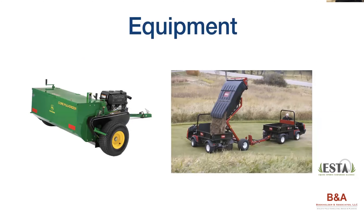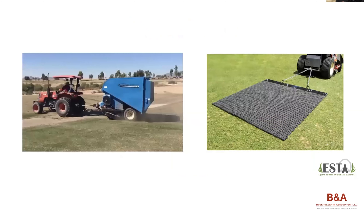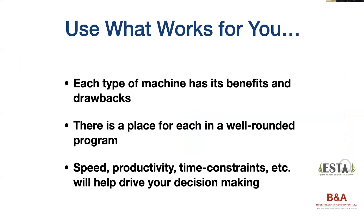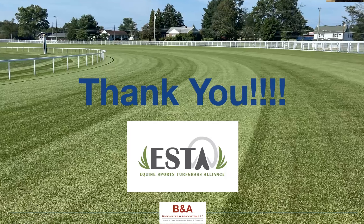For cleanup once you've pulled those cores, you have options: an old John Deere core pulverizer, a power-actuated sweeper like a Toro sweeper unit, or just a good old drag mat to break them up. Use what works for you — each type of machine has its benefits and drawbacks, and there's a place for each in a well-rounded program. Mix and match — I can't emphasize that enough. Whatever you do, make sure you're doing something, and with that I thank you.